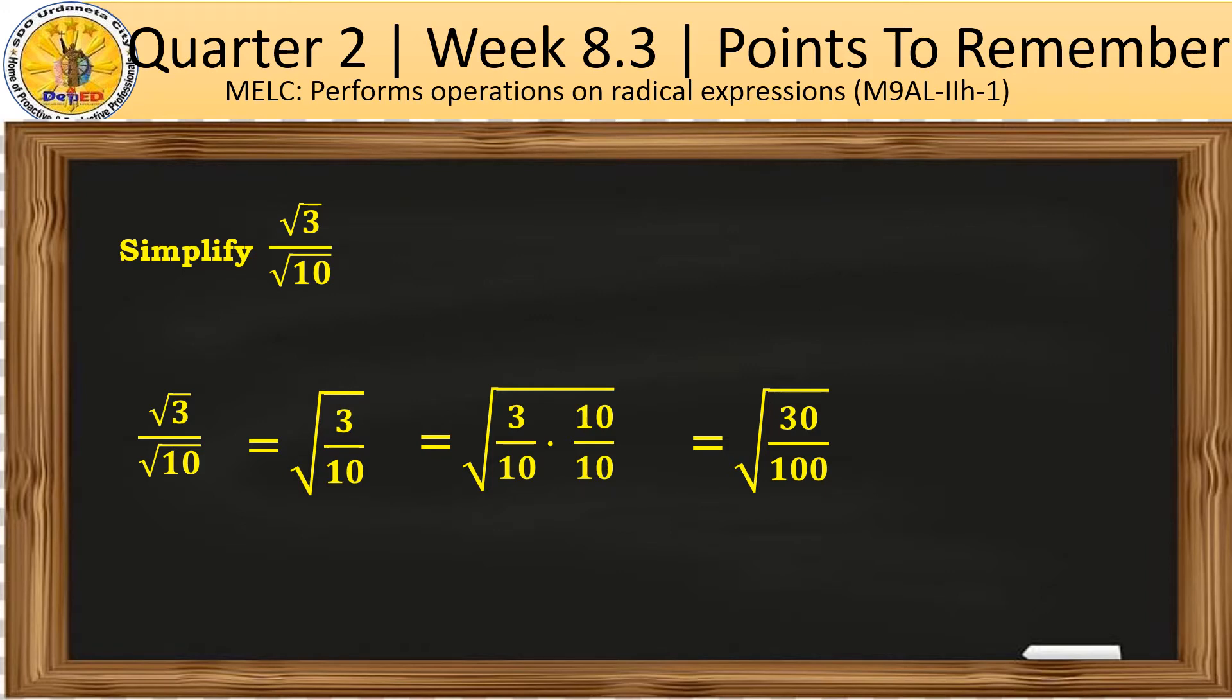You will notice 100 is a perfect square number, so we can get the square root of that number and it becomes 10. For the numerator 30, that can no longer be simplified. Therefore, our final answer will be square root of 30 over 10.